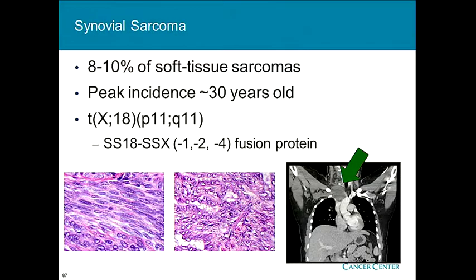Let's talk about synovial sarcoma. This represents about 10% of our soft tissue sarcomas. Peak incidence is in the late 20s and early 30s. All these tumors have an interesting translocation between chromosome 18 and chromosome X — SS18 and SSX. The biology of this fusion protein is just starting to be worked out. It's known that if you put this fusion protein into cell lines, it will be transforming. It alters transcription, but interestingly, it doesn't bind DNA.